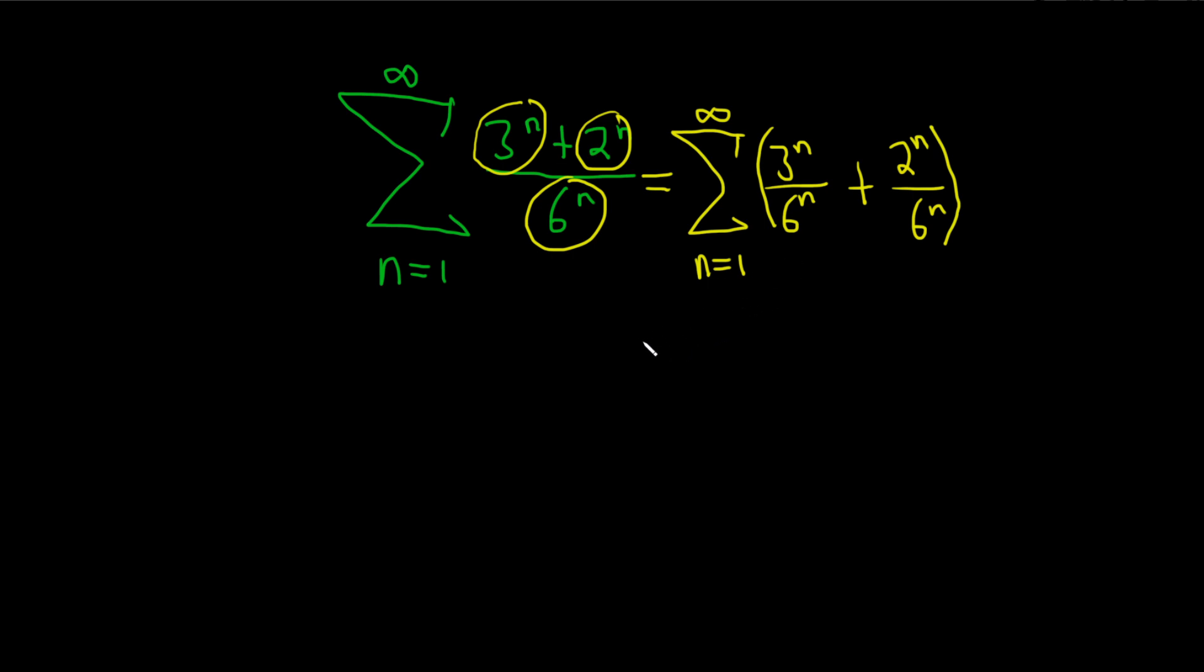And now we can break this up into two separate sums. So this is equal to the infinite sum, as n runs from 1 to infinity. If we have 3 to the n over 6 to the n, because they're both to the nth power, we can write it as 3 over 6 to the nth power. But 3 over 6 is just 1 over 2. So we have 1 over 2 to the nth power.